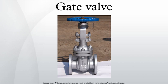Bonnets provide leak-proof closure for the valve body. Gate valves may have a screw-in, union, or bolted bonnet. Screw-in bonnet is the simplest, offering a durable, pressure-tight seal. Union bonnet is suitable for applications requiring frequent inspection and cleaning, and also gives the body added strength. Bolted bonnet is used for larger valves and higher pressure applications.